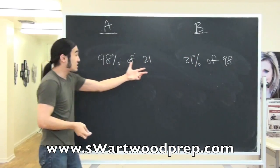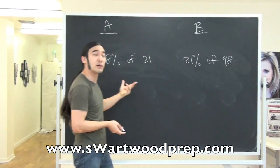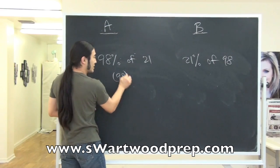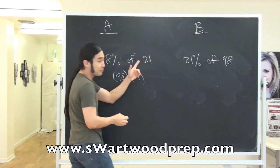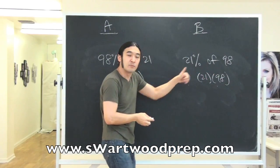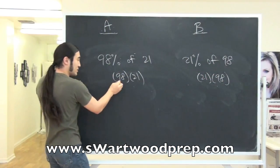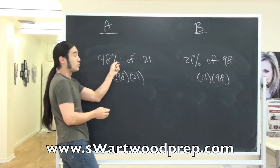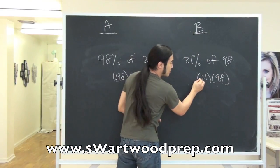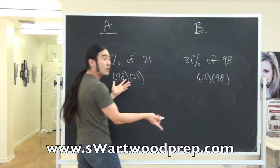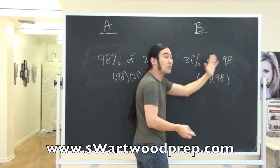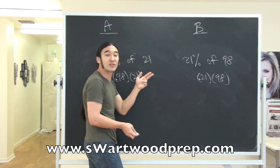From what we just did, it's very obvious that these are going to be the same. But another way to play this if you don't like fractions: what you're really doing is 98 times 21 on one side, and 21 times 98 on the other — not including the percentage. If you convert to a percentage, you're moving two decimal places over: 98% is 0.98, and 21% is 0.21. These guys are equivalent. When you multiply them out, it's 98 times 21 versus 21 times 98 — those numbers are exactly the same.